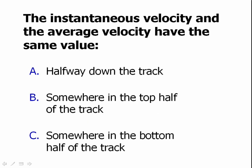In other words, the instantaneous velocity and the average velocity have the same value: A, halfway down the track, B, somewhere in the top half of the track, or C, somewhere in the bottom half of the track.